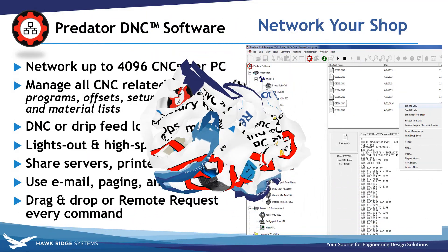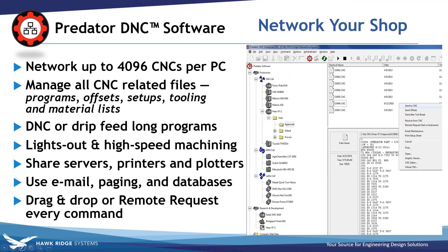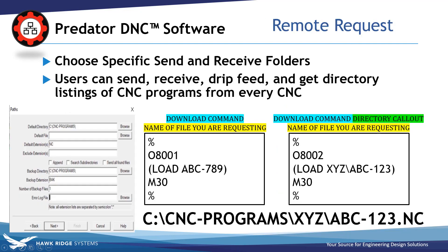Network over 4,000 CNCs per PC, manage all your CNC related files, drip feed long programs, lights out and high speed machining, and email and paging notifications. You can also choose send and receive folders. Send, receive, drip feed, and get directory listings of CNC programs from every CNC.